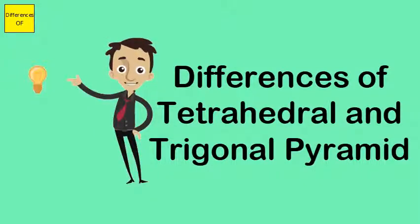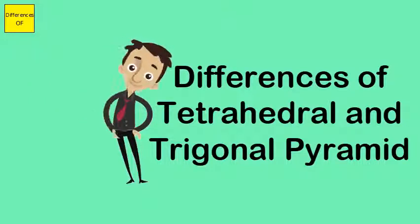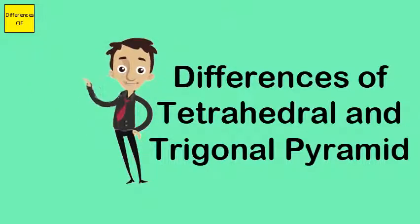Trigonal pyramid has one atom as the apex and three identical atoms at the corners which make a pyramidal base.